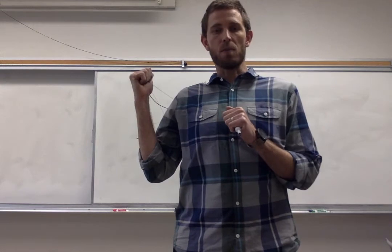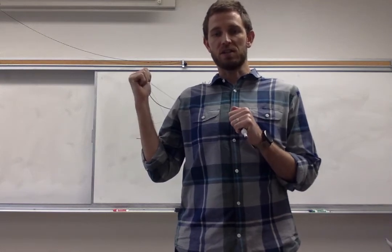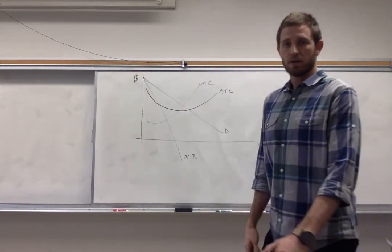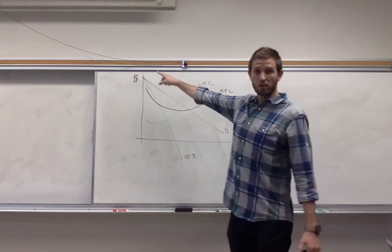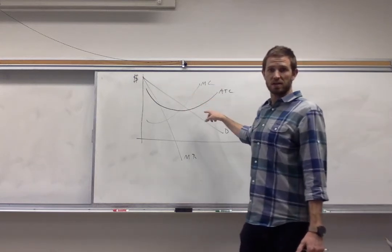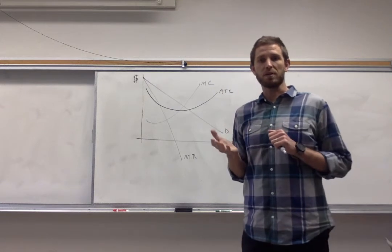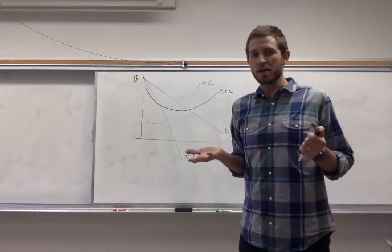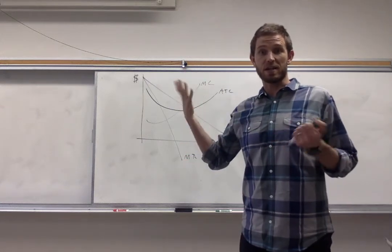The graph that I've got on the board behind me represents such a firm. So let's take a look. Straight away we can see that there's a downward sloping demand curve. That demand curve represents the overall market because with monopoly that firm is the only one in the market, so of course they're facing everybody in the market.